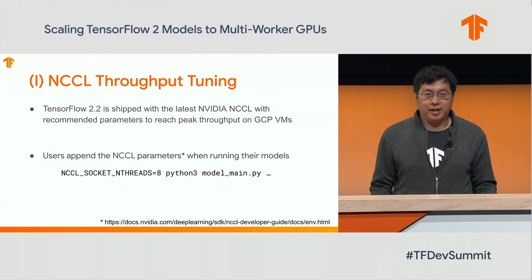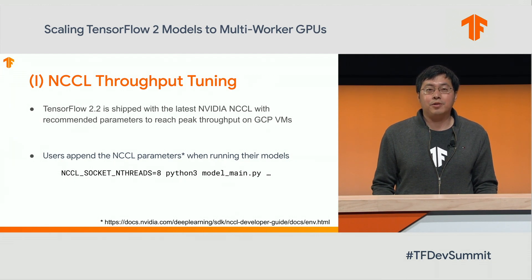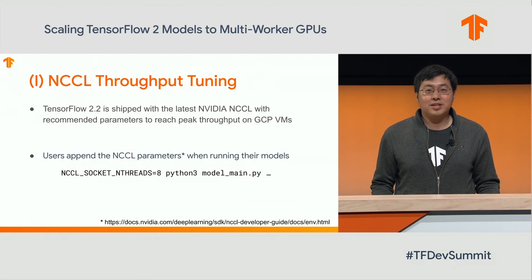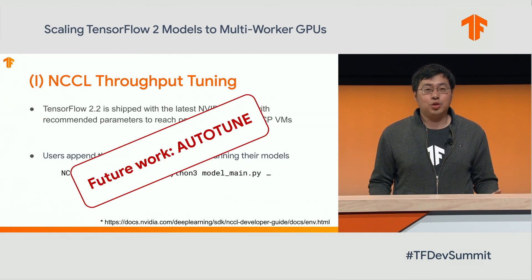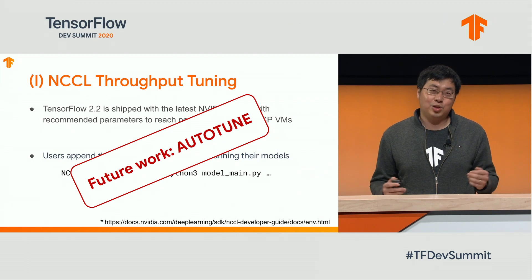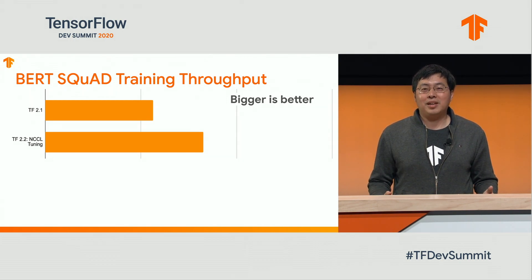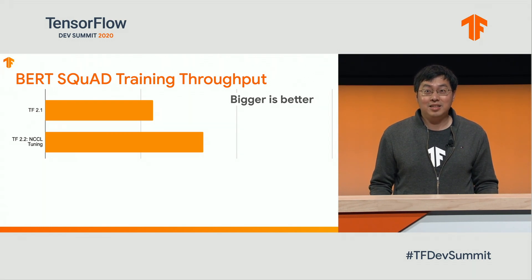First optimization: NCCL throughput tuning. TensorFlow 2.2 is shipped with the latest NVIDIA NCCL libraries. We have done extensive experiments on Google Cloud VMs to identify a set of recommended parameters to help you reach peak throughput. Users can append those parameters when running their models — such as the NCCL socket and threads parameters — before the model's main.py. If users have a different network environment than Cloud VMs, you may need to run experiments to find the optimum parameters. We are working with NVIDIA to auto-tune NCCL parameters, so in future TensorFlow releases users won't need to manually set them. For now, with optimum NCCL parameters, we see a dramatic 30% throughput improvement in BERT SQuAD.